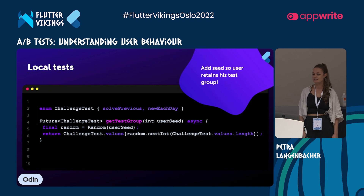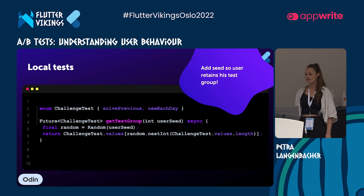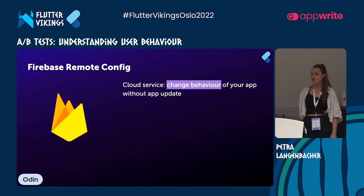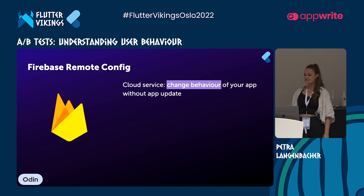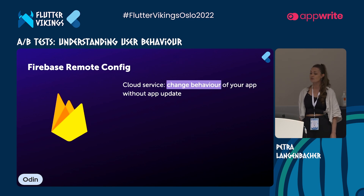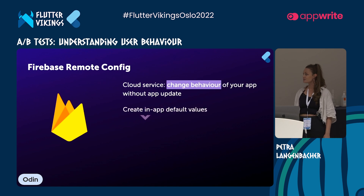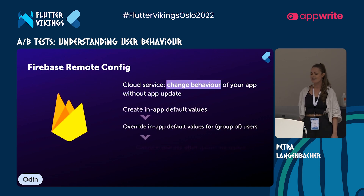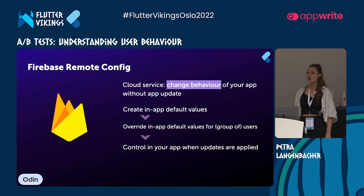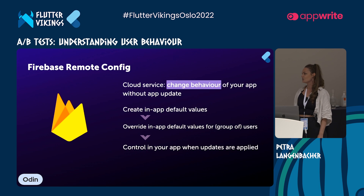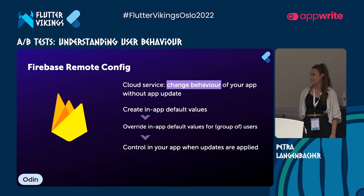A bit more powerful and flexible is implementing tests remotely — for example, with Firebase Remote Config. What is Remote Config? It's a cloud service that allows you to change the behavior of your app without an app update. You create in-app default values, then override these values either for all your users or for a specific group. In the end, you can control in your app when these updates are applied.